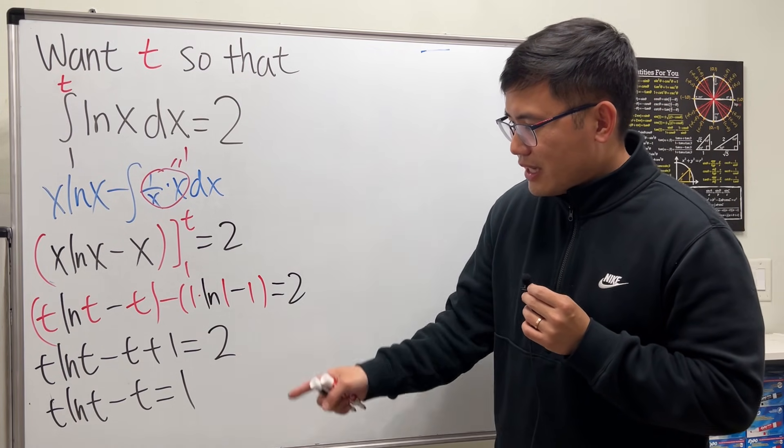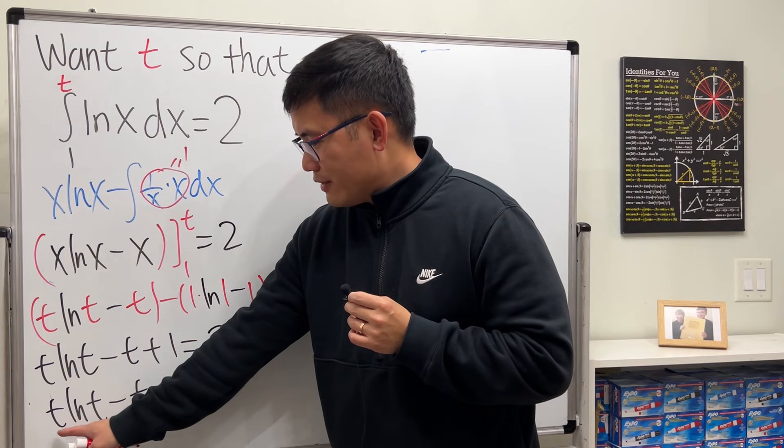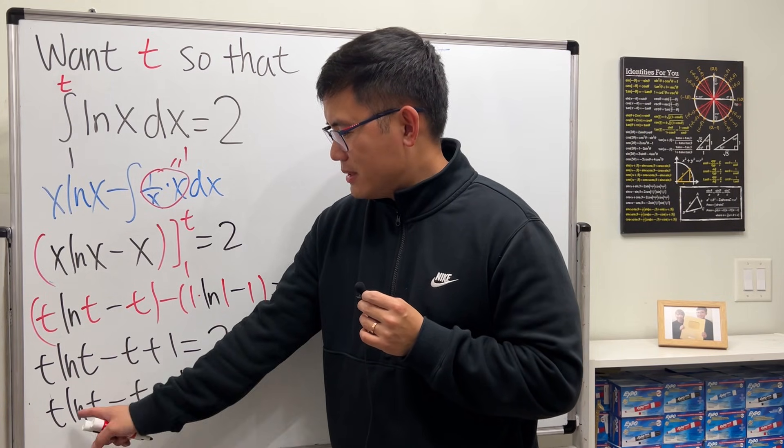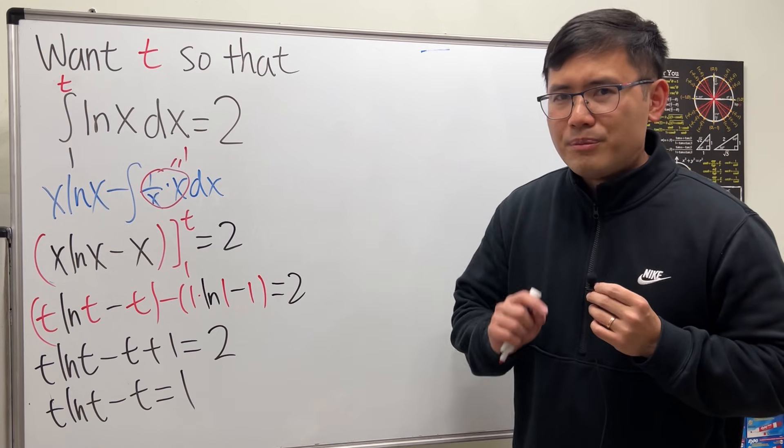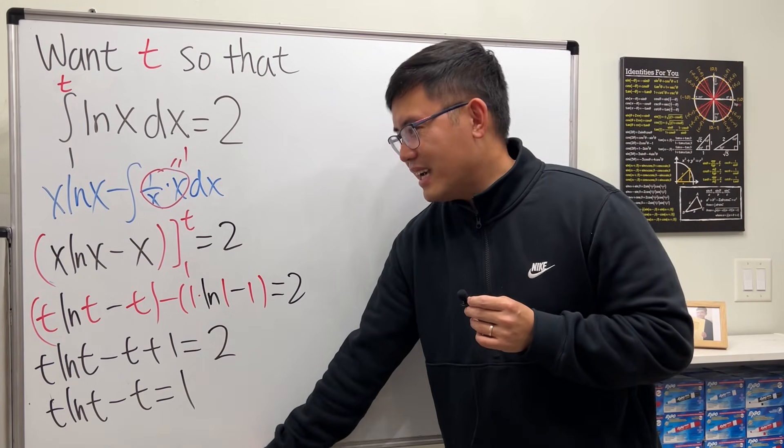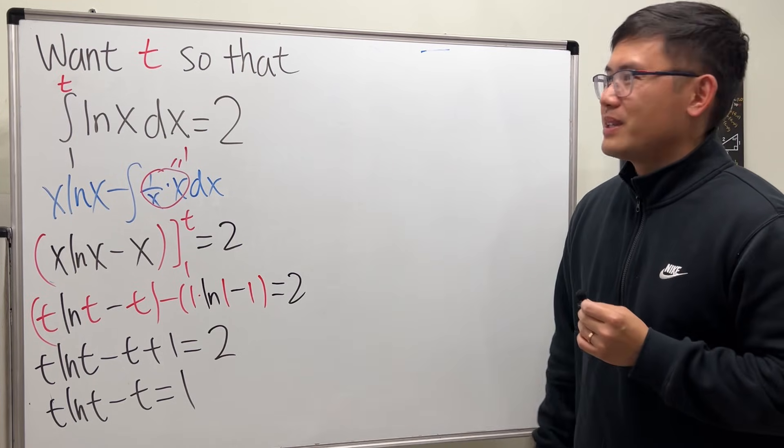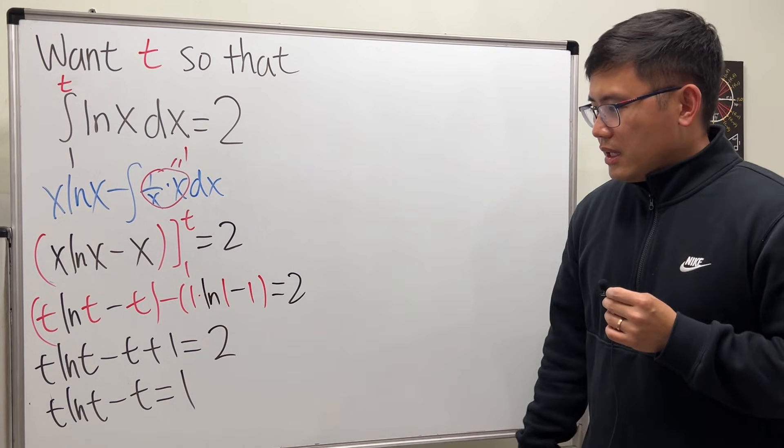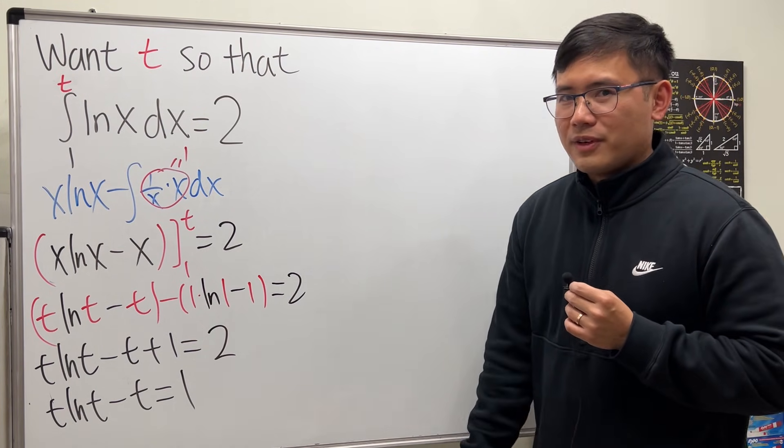Well check this out. Notice that whenever we have a t to some power times natural log of t, something like that, give the Lambert W function a try. Yes, it's a Lambert W function again. It helps us for this one as well. So let me remind you guys what the Lambert W function is.